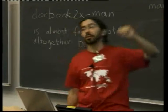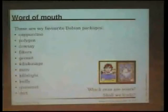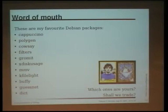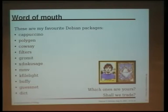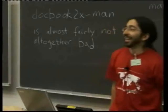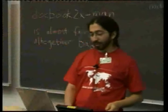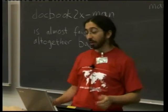So that's my list of favorite packages. Cappuccino is the most important, and Polygen is the second most important. So now you all install them on your laptop, right? Word of mouth or black magic — you can do searches. But does that scale?